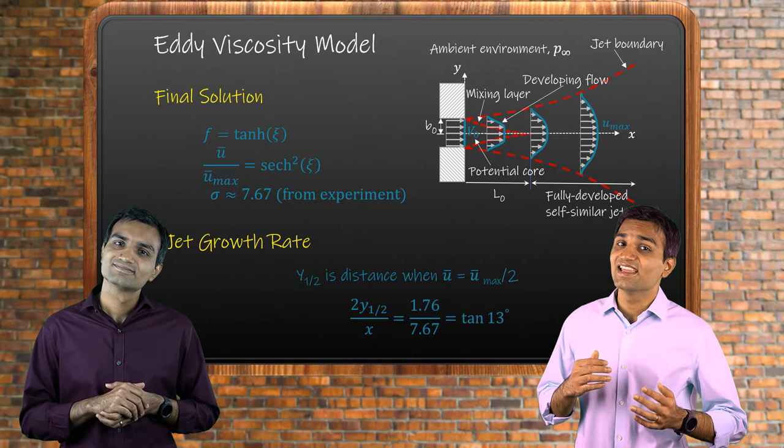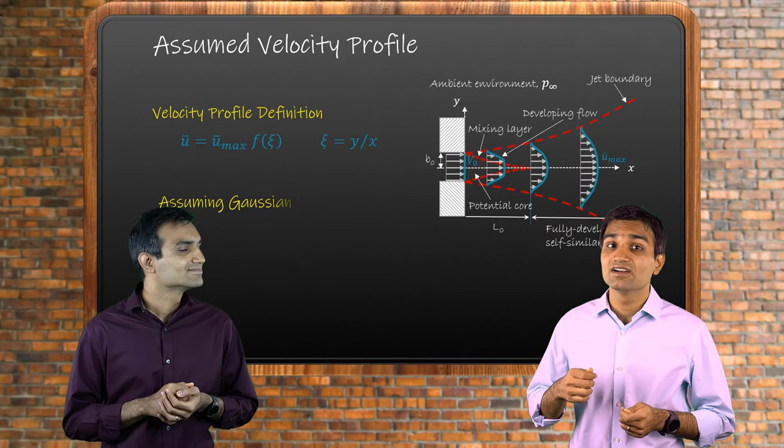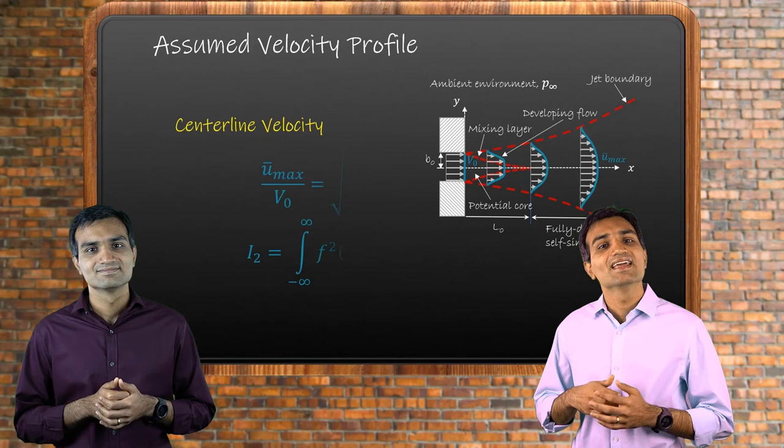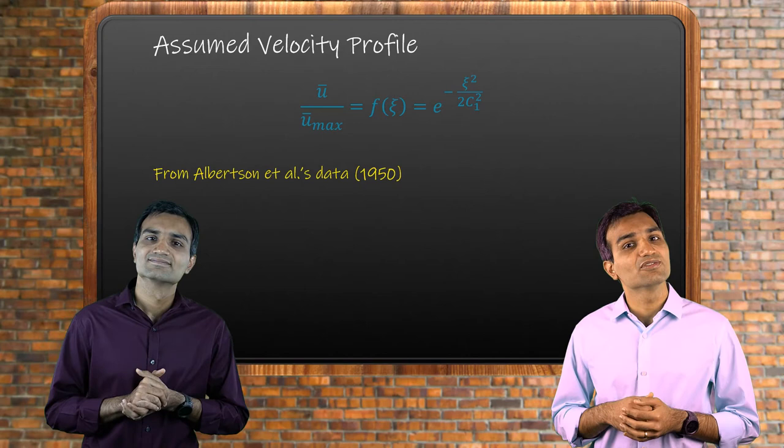In a different approach, we assume a velocity profile shaped like a Gaussian curve and come up with a different set of similarity variables. Using the jet's integral equations, we estimate the centerline velocity. In this case, c1 is obtained from experiments. For example, Albertson in 1950 computed the value of c1 to characterize the velocity distribution in turbulent jets.